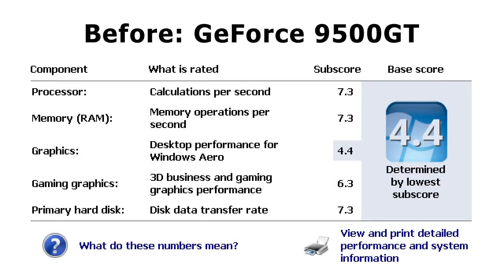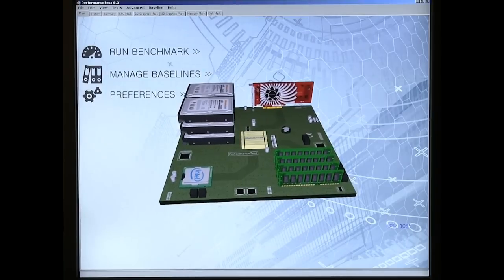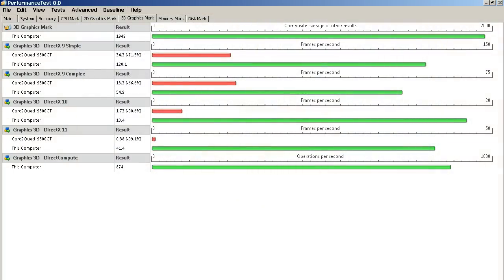Finally, let's view the results of our labors. Looking at the Windows Experience Index, the graphics and gaming graphics scores have increased from 4.4 and 6.3 to 7.4 and 7.4 respectively. The whole PC also looks a lot more balanced, with the constraint on performance now being the four-year-old motherboard with its relatively slow memory and disk interface. Moving on to 3D Passmark tests, a marked performance improvement can easily be noted, with the green bars representing the new card significantly outpacing the red bars for the older card, which wasn't even capable of running some of the tests.